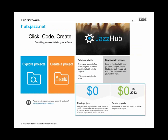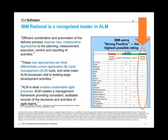We offer this capability as an on-premise solution — you can buy and download our collaborative lifecycle management solution. We also offer it online at hub.jazz.net, hosted as a cloud, either public or private. This means you don't have to download, install, configure, or maintain it — we do that for you. Through the rest of the year, it's free for private projects. In 2014, we intend to start charging for private projects, but public projects are free and will continue to be free. Our ALM solutions are leading solutions — the market scope for application lifecycle management rated our solution as a strong positive compared to other offerings in this space.